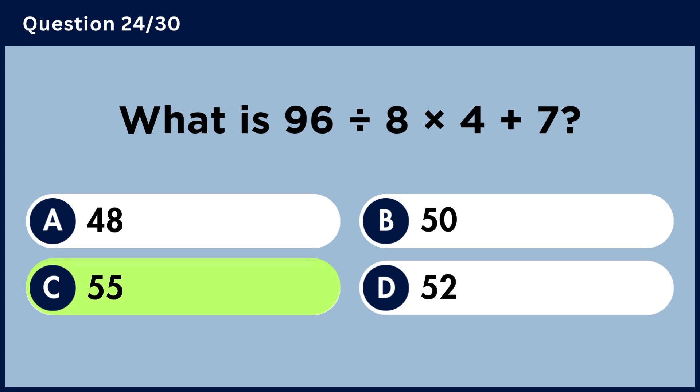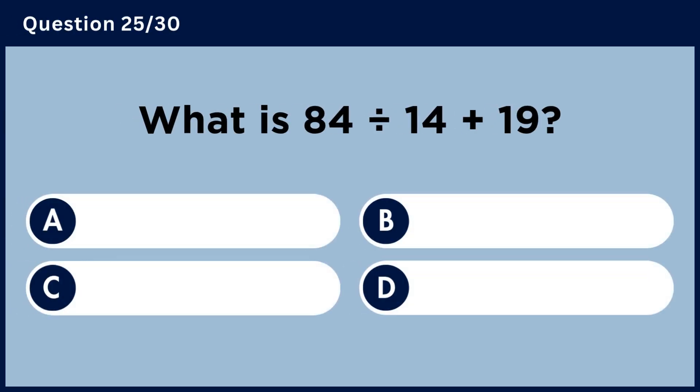What is 96 divided by 8 multiplied by 4 plus 7? Answer C, 55.